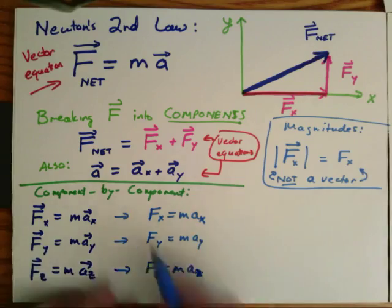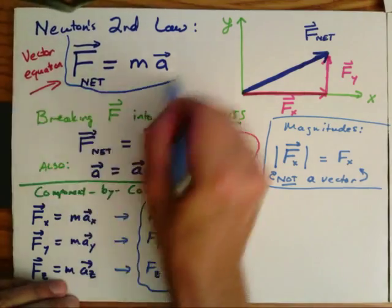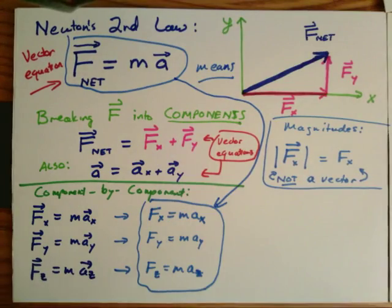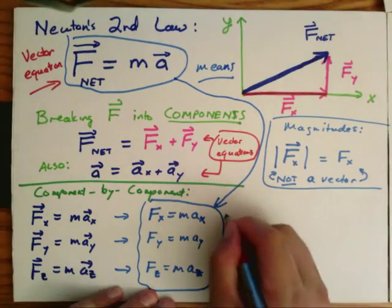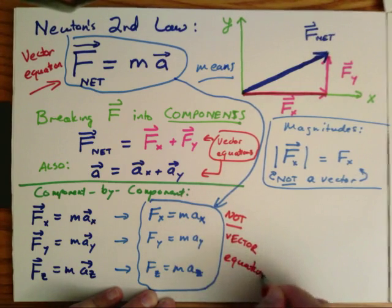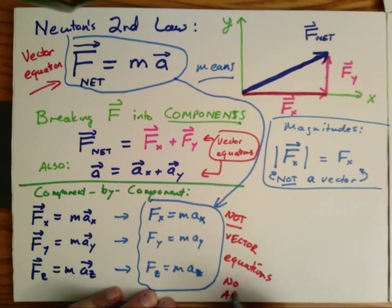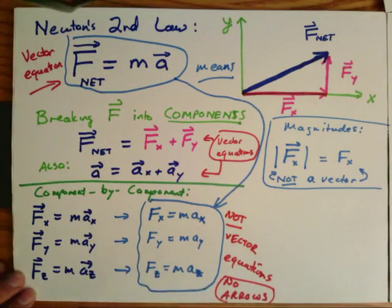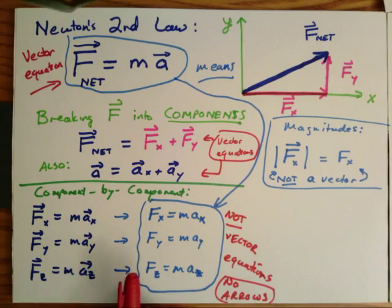Where F of x, F of y, and F of z are the components of the net force. So this vector equation means these three equations here. These are not vector equations. In other words, a vector equation, F net equals M a, means these three equations without vectors. These are just numbers in the particular components, x, y, and z, the magnitudes.